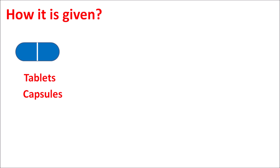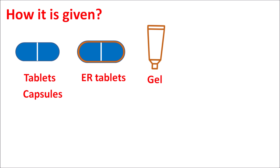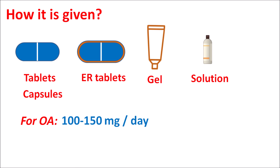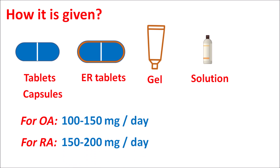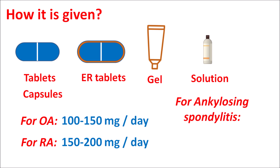Diclofenac is available in various dosage forms: tablets, capsules, extended release tablets, topical gel and ointment, oral solution, and transdermal patches. The dose depends on the clinical indication. For osteoarthritis: 100–150 mg per day in divided doses. For rheumatoid arthritis: 150–200 mg per day in divided doses. For ankylosing spondylitis: 100–125 mg per day.